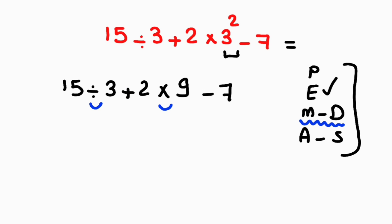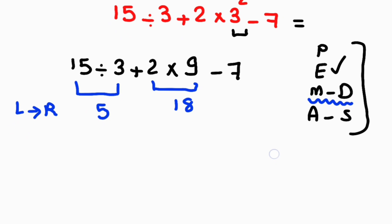From left to right: 15 divided by 3 gives us 5. 2 times 9 gives us 18. Now let's rewrite the expression again.